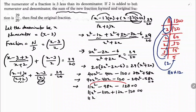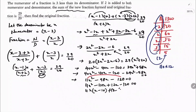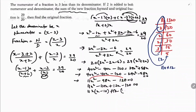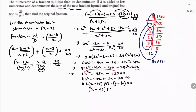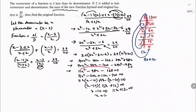Taking 11x common from the first two terms: 11x times x minus 10; and taking 12 common from the last two: 12 times x minus 10. So we get x minus 10 times 11x plus 12 equals 0. Therefore x minus 10 equals 0 giving x equals 10, or 11x plus 12 equals 0 giving x equals negative 12 by 11 — which we reject since x must be positive. So x equals 10.